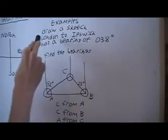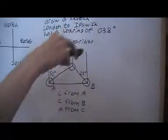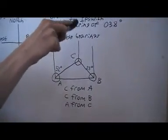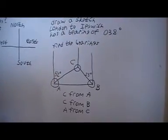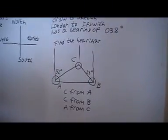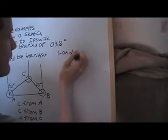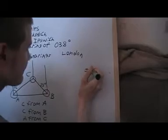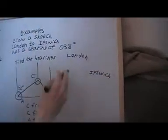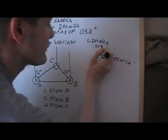First example says, draw a sketch, London to Ipswich has a Bearing of 038. Now, when we've got Bearings, we must put the noughts in, because they must always have three digits. So, if I want to draw that, London would be up here, Ipswich would be round here. Like that. And I want to draw a bearing of, this is the north, 38 degrees.